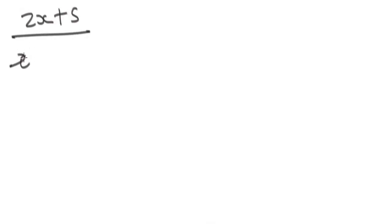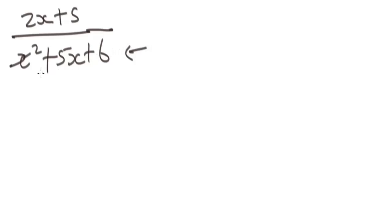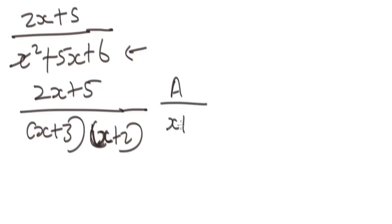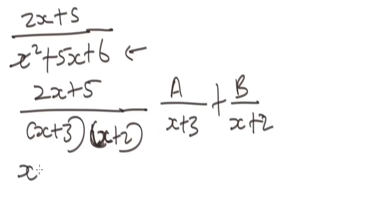What if you are given two x plus five over x squared plus five x plus six, and asked to resolve this into partial fractions? First, factorize the denominator: x squared plus five x plus six factors into x plus three times x plus two. Since we have two factors in the denominator, we split into A over x plus three plus B over x plus two.